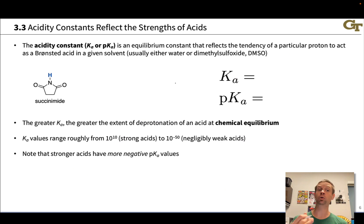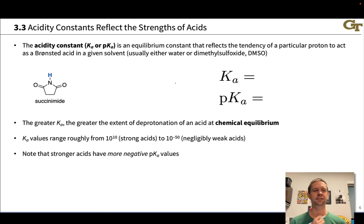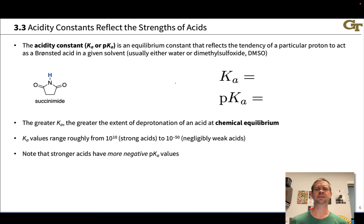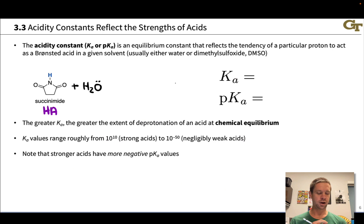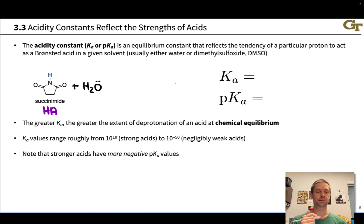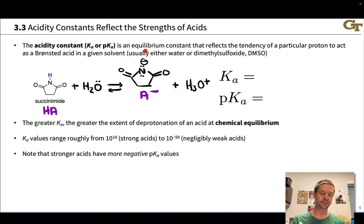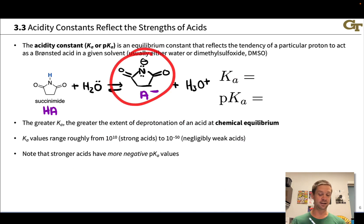We can assign a Ka or pKa value to every proton within an organic molecule, though we generally focus on the most acidic proton. For example, in succinamide, one proton highlighted is far and away the most acidic, for reasons we'll touch on when we discuss the structural approach to acidity. The solvent we typically consider is either water or dimethyl sulfoxide. Thinking about water, we consider the reaction of succinamide — or more generally an acid HA — with water as a base, which picks up a proton from HA to produce the conjugate base A- and hydronium.